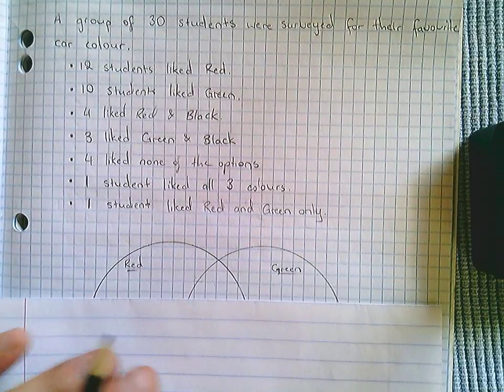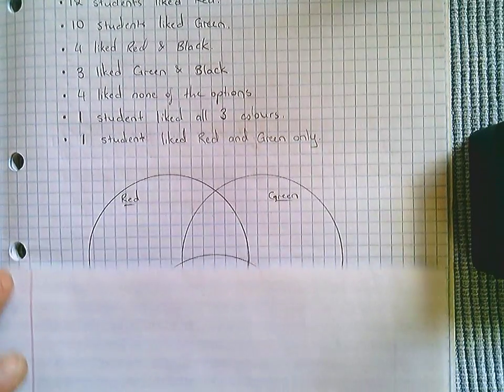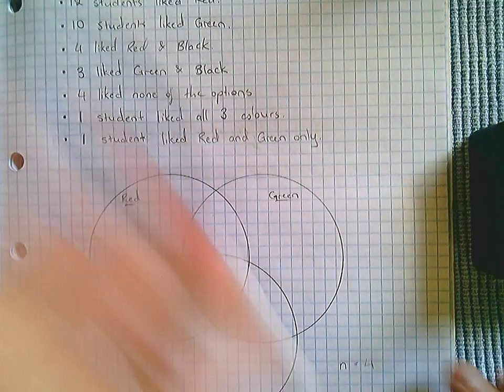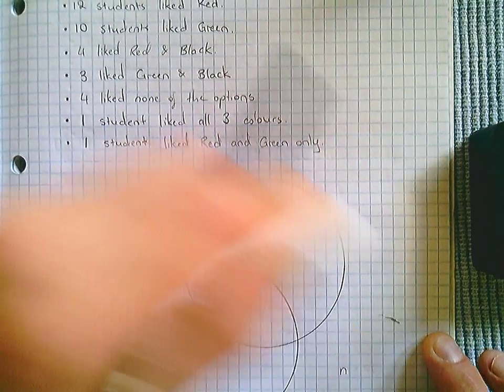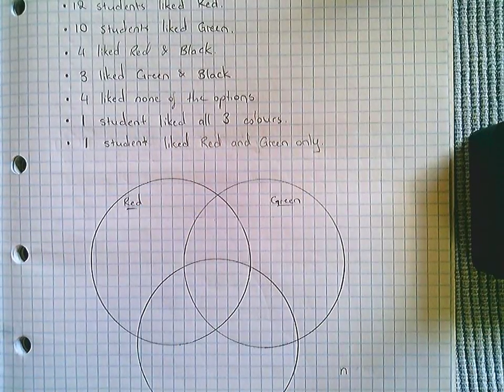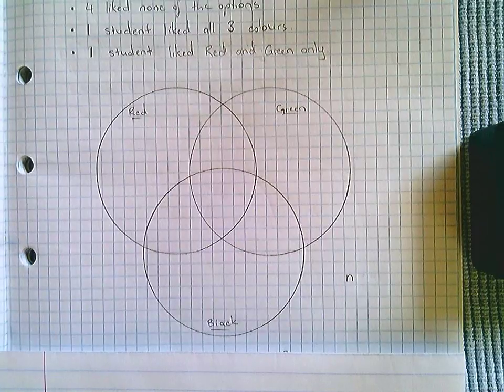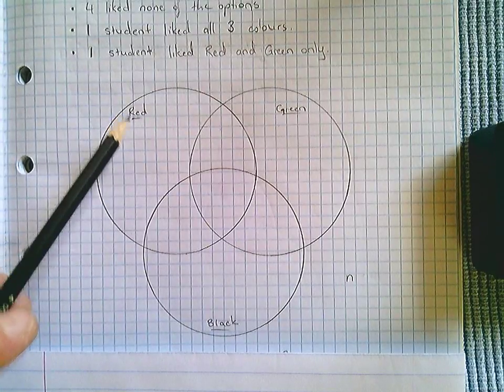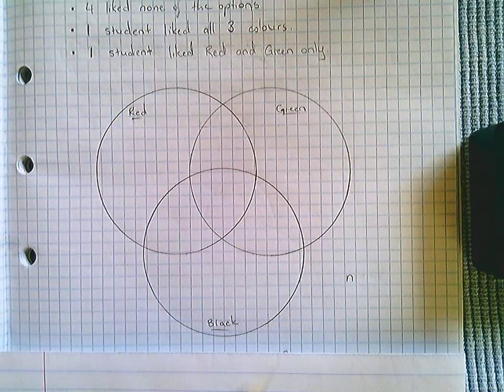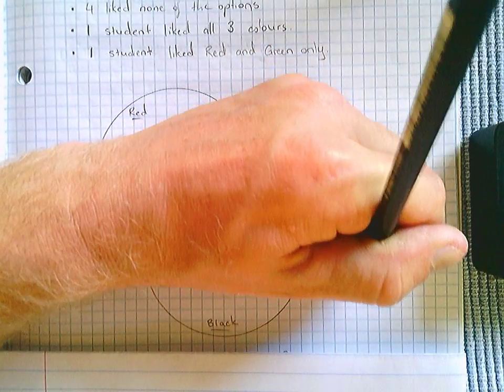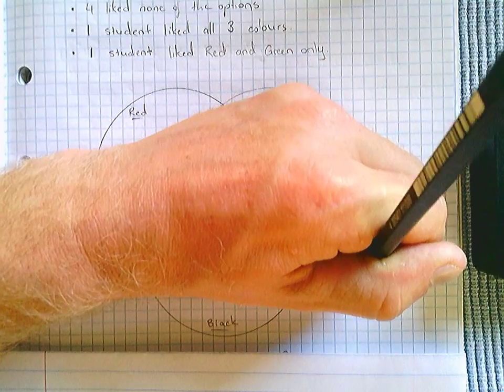What we have to do, just like the last video on Venn diagrams, is create our Venn diagram with our three groups listed in our three circles. I've gone red, green, black, and you might note this N, which I'll explain shortly.